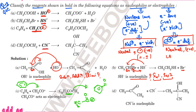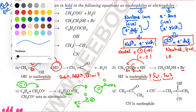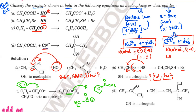So the product is benzene attached to CO-CH₃ — this is a ketone (acetophenone). Now, a question for you: what kind of reaction is this? Is it an addition reaction, an elimination reaction, an electrophilic substitution reaction, or a nucleophilic substitution reaction? Tell me in the comments.